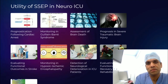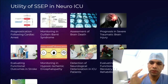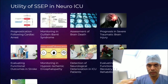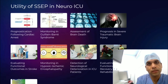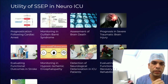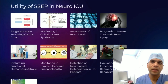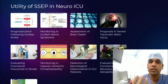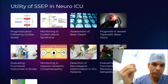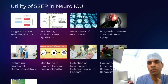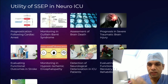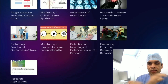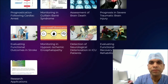Not only will I explain the uses, we will also show you live how to connect SSEP in the ICU and get the waveforms. The areas where SSEP can be useful in the neuro ICU include: prognostication for in-hospital cardiac arrest and hypothermia patients, monitoring in GBS syndrome, assessment of brain death, prognostication of traumatic brain injury and functional outcomes, stroke monitoring, hypoxic ischemic brain damage, evaluating functional recovery in rehabilitation, and certain research purposes. SSEP is very safe to perform in the ICU, using very low current.